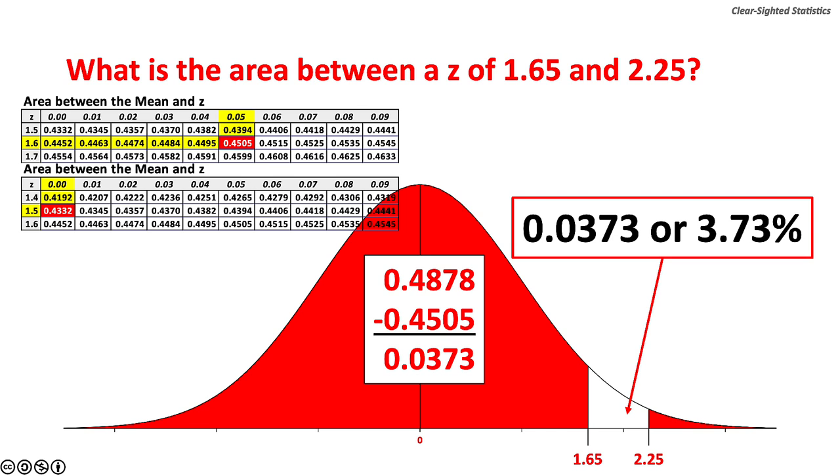What is the area between a z of 1.65 and 2.25? We need to remove the joint probability of the area between z values of 0 and 1.65. The answer is 0.0373 or 3.73% found by 0.4838 minus 0.4505.